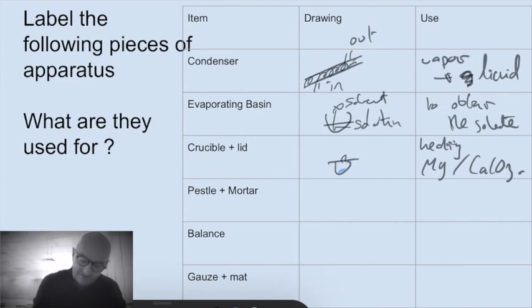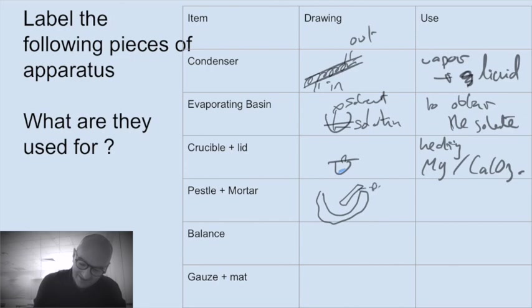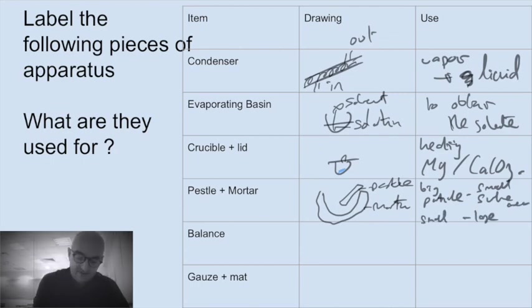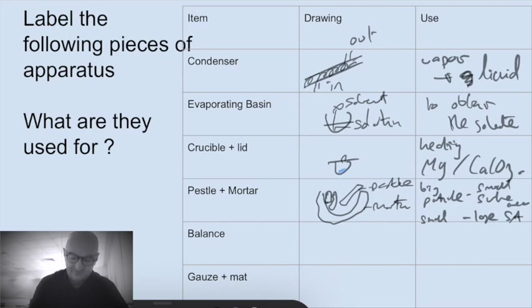Here we have pestle and mortar. Oh my gosh, totally out of calibration. Pestle and mortar. So this is the cute thing with this. So if you've got a big particle, that means it has a small surface area. If you have small particles, the converse is true. So small particles, this makes large into small. So go from our big bricks into little bits of dust.